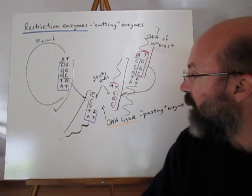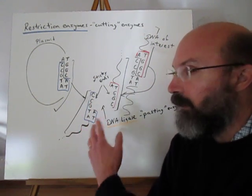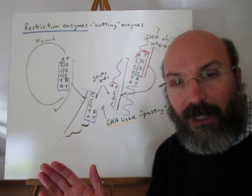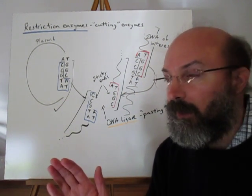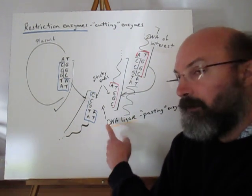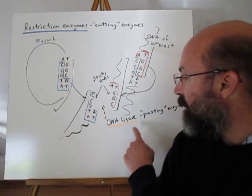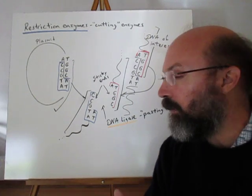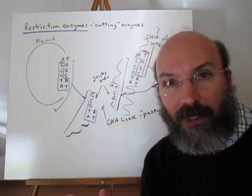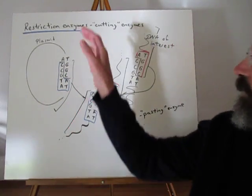These sticky ends can come together and anneal — in other words, they'll form hydrogen bonds again. In order for that to happen, there does have to be an enzyme present called DNA ligase. And this is what will be used to glue them or paste them together — that enzyme makes that happen.